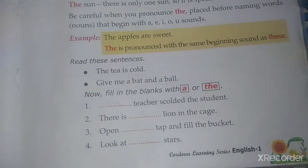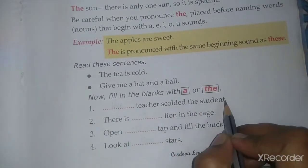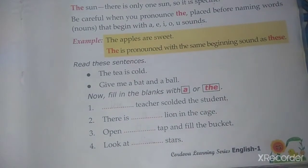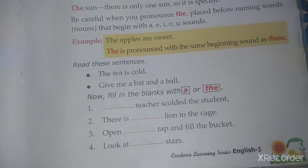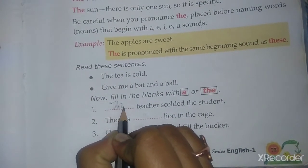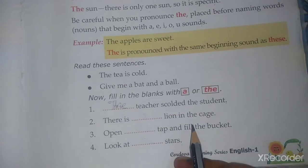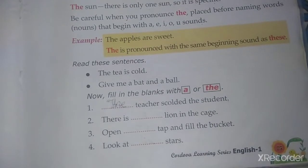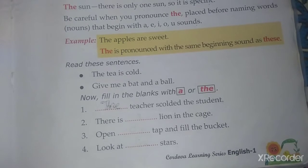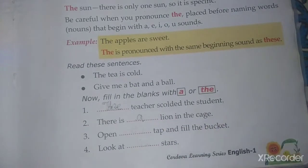Give me a bat and a ball. Now fill the blanks with 'a' or 'the'. First one: dash teacher scolds the student. Can I write 'a teacher scolds the students'? No. Next one: There is dash lion in a cage. Can I say 'there is the lion in the cage'? No. Instead, I will say: there is a lion in the cage.